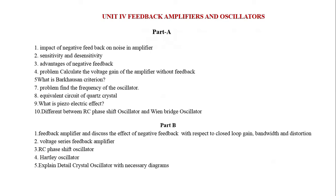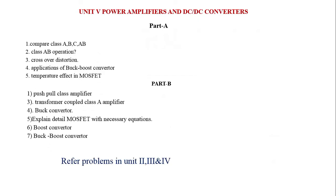Now we go to Unit 5: Power Amplifiers and DC-to-DC Converters. Here also the unit has two parts and I have taken certain important two-mark questions. How do you compare class A, B, and C amplifiers? Or, what is meant by class A and class B operation? Then, crossover distortion in an amplifier — that is a very important question. Then, application of buck-boost converter. Next, the temperature effect in power amplifiers — also very important. Now we go for the Part B answers.